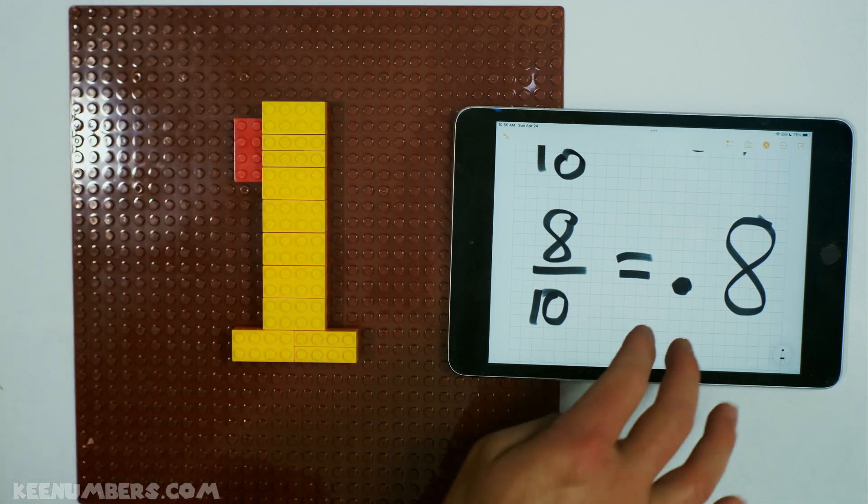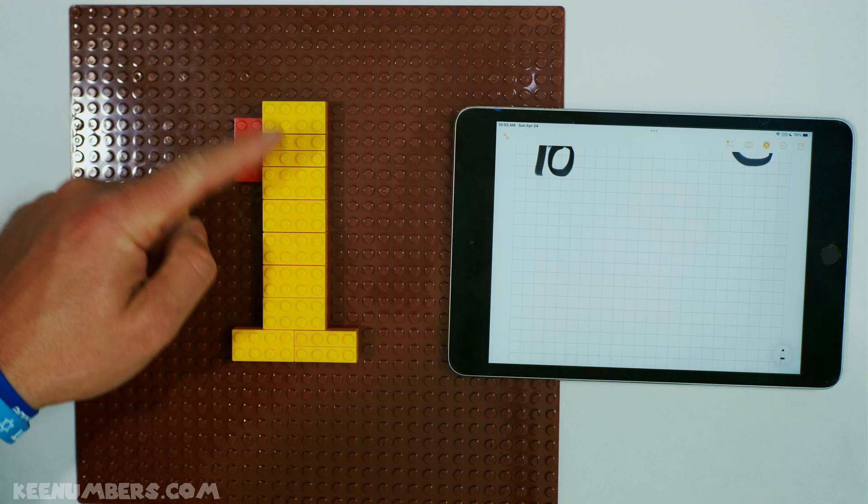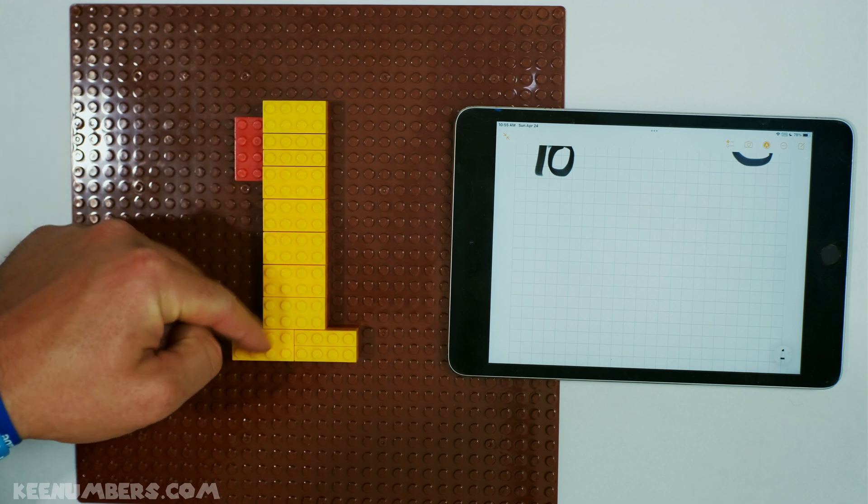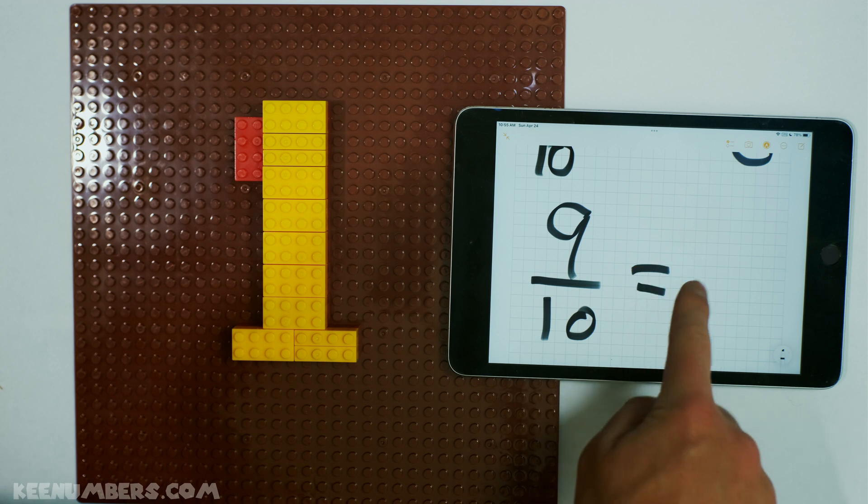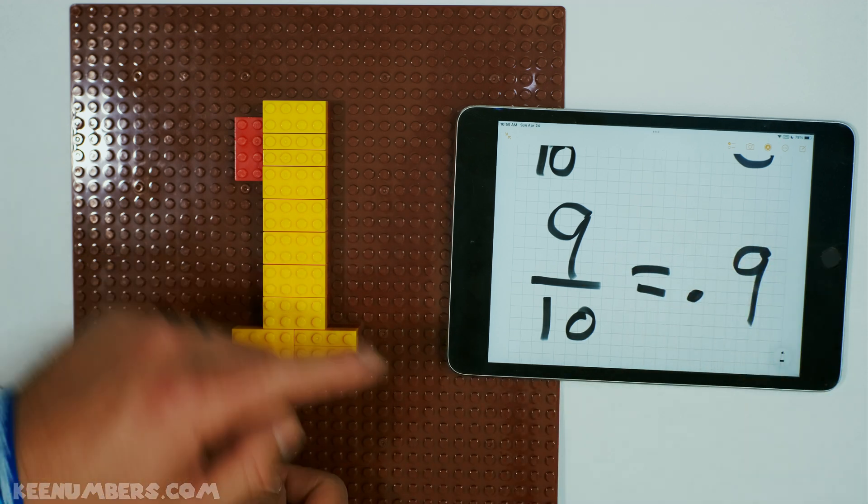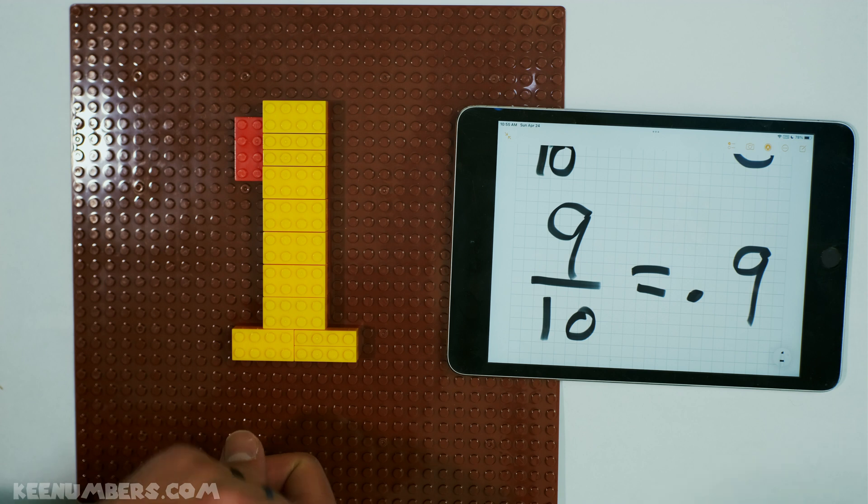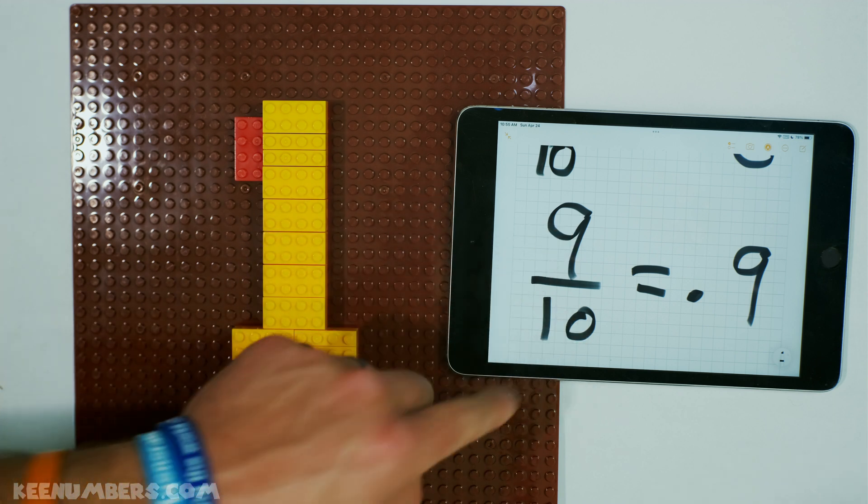Now we can do 9 tenths. I have 9 yellow bricks. 1, 2, 3, 4, 5, 6, 7, 8, 9. 9 tenths. Don't get scared. This is 0.9. That is our decimal representation for writing this fraction. 9 tenths.